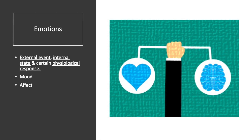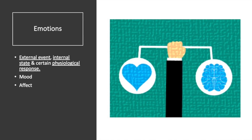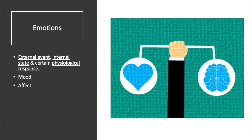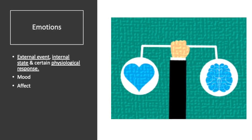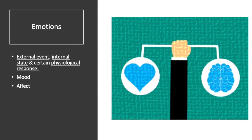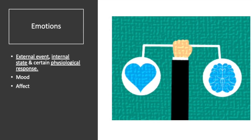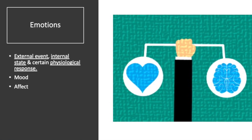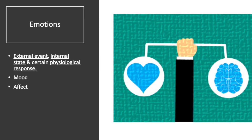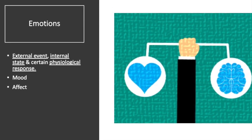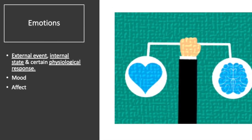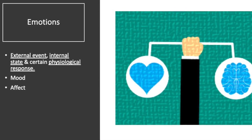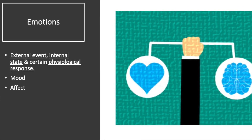Other important things to consider in the realm of abnormal psychology include one's mood state. Emotions are defined as the action tendency to behave in a certain way, elicited by an external event, internal state, and certain physiological responses — they are usually short-lived. Mood is the more persistent period of emotionality or affect. Affect is a momentary emotional tone that accompanies what we say or do.